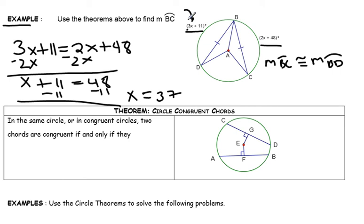I'm going to substitute this back in to my original expression to find the measure of arc BC. And it doesn't matter which one you substitute it back in for because they should be congruent. And that's how we can check to see if we did it right.